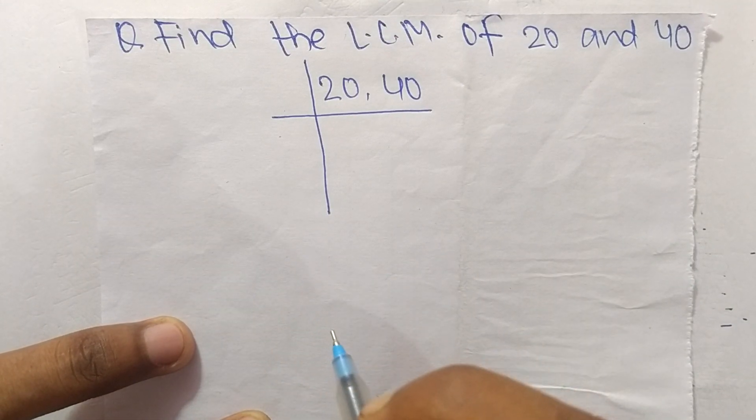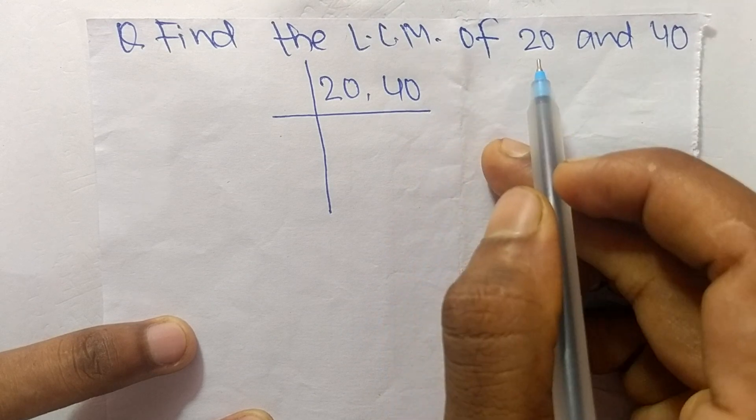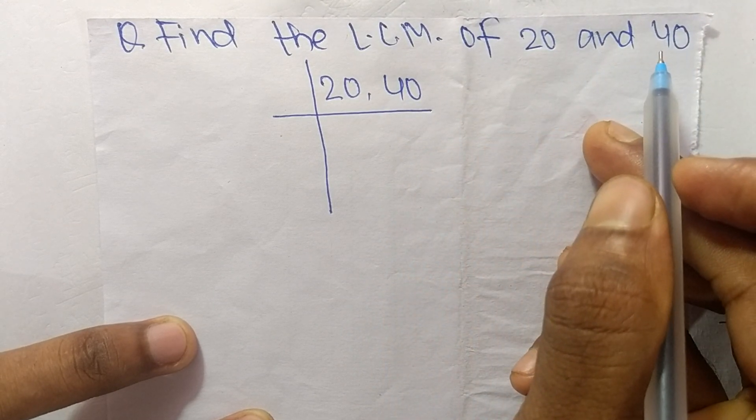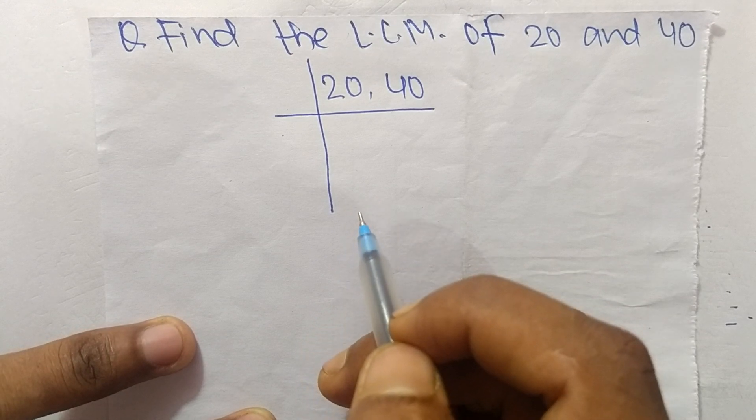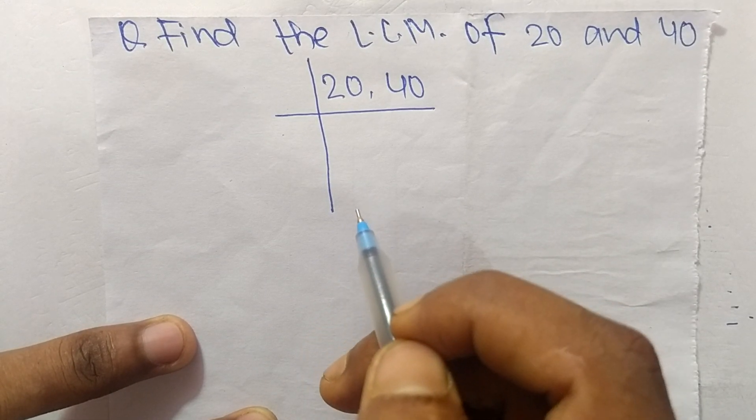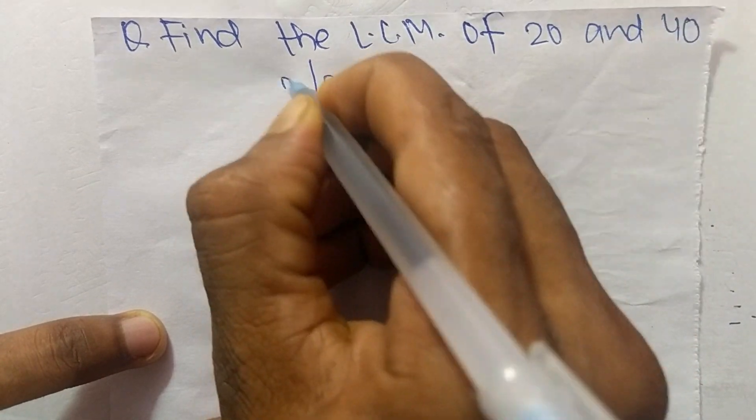Today in this video we shall learn to find the LCM of 20 and 40. To find its LCM, first we choose the lowest number that can exactly divide 20 and 40. So we take 2.